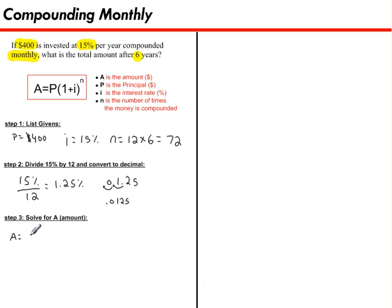The principal is 400. And it's multiplied by this bracket, 1 plus my I, which I converted right here in step 2, 0.0125. And it's to the exponent n, which we found was 12 times 6, or 72.